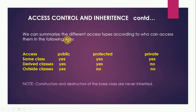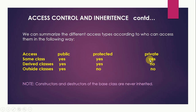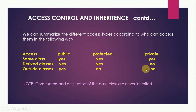We can summarize the different access types according to who can access them. Members of the same class can access public, protected, and private members — all members are accessible to the members of the same class. Members of the derived class can access public and protected members, but they cannot access private members of the base class. Members outside the classes can access only the public members of the base class. Protected and private members are not accessible outside the class.